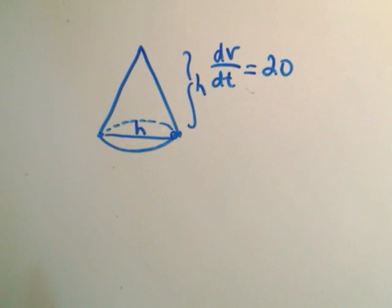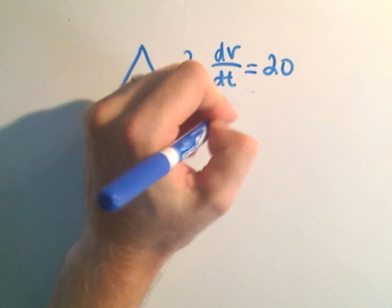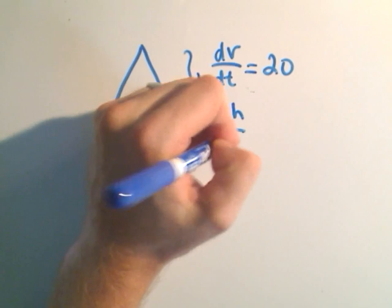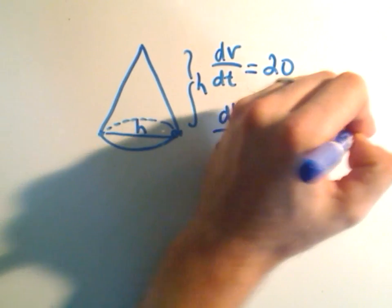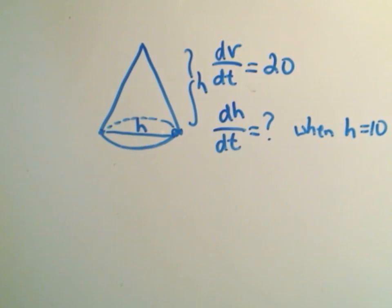They say that they want to know how fast the height is changing. So dH/dt, and they want us to do this when H equals 10, when it's 10 feet high.